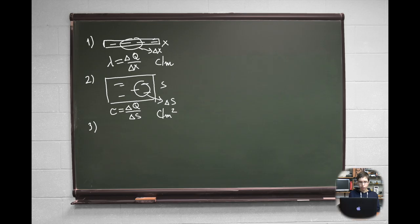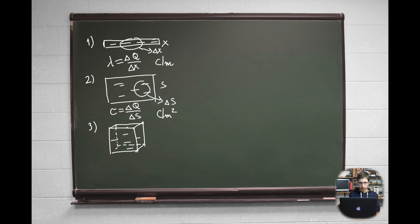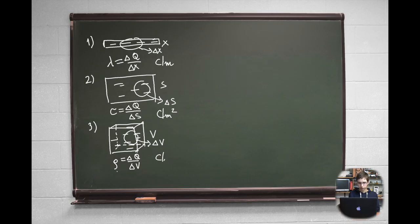The last type is charge density per unit of volume, appropriate for objects like a cube where all three dimensions are important. This type of charge density is calculated using the formula ρ equals Δq over ΔV, where Δq is again an amount of electric charge and ΔV is the unit of the object's volume where the charge is situated. It is measured in coulombs per meter cubed.